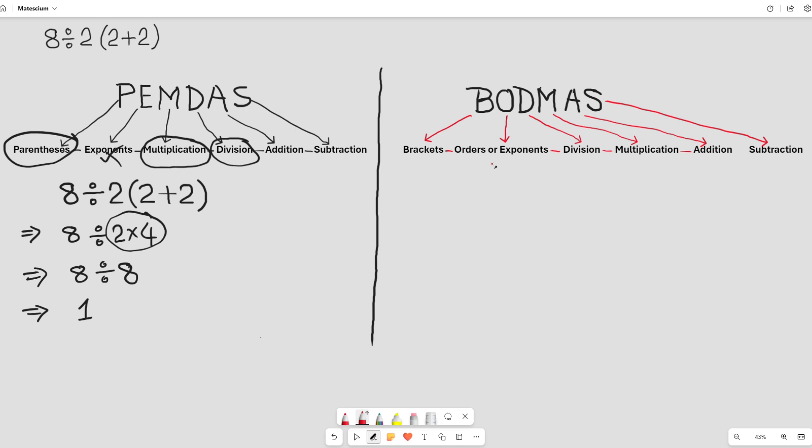Let's solve this equation as per BODMAS. 8 divided by 2 multiplied by 2 plus 2 in brackets. We have to work on bracket first. 8 divided by 2 times 4.